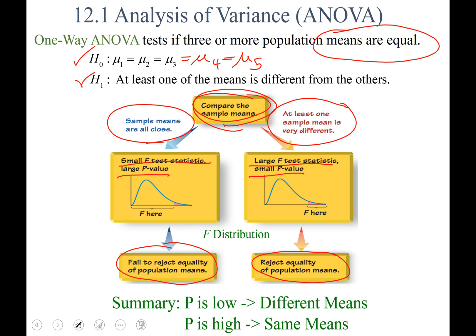I added a little summary here. It takes you from the start of the thought process to the end, and it goes like this. If your p is low, then you will conclude that the populations have different means. If p is high, we will conclude that the different populations have the same means.